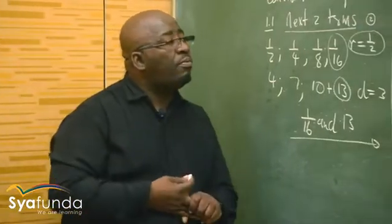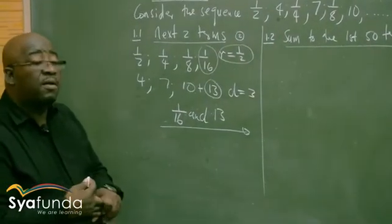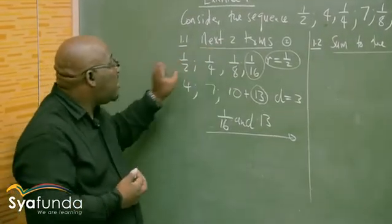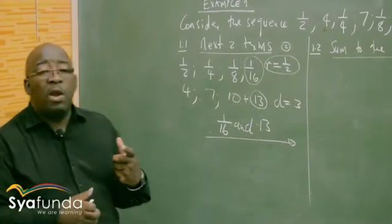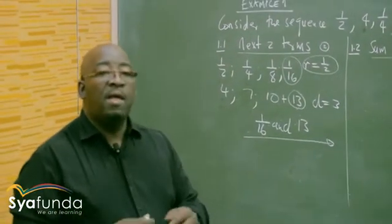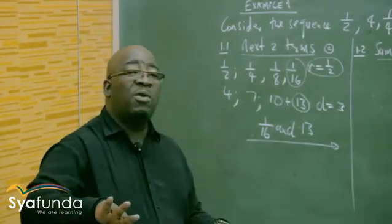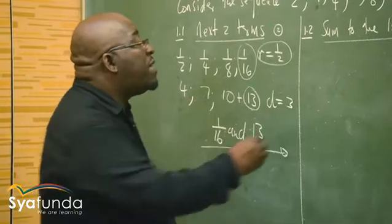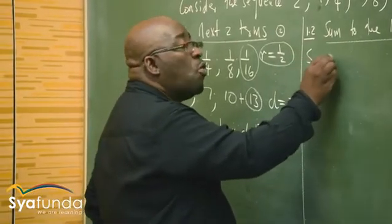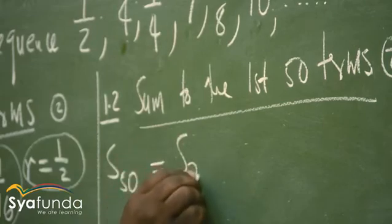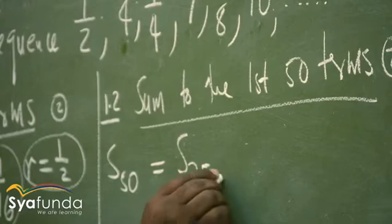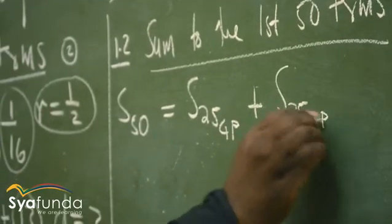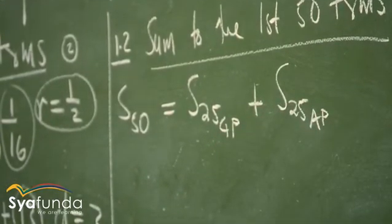Question number two: find the sum of the first 50 terms. We are given two sequences — the geometric as well as the arithmetic. The sum of the first 50 terms would be equal to the sum of the first 25 terms of the geometric progression, plus the sum of the first 25 terms of the arithmetic progression. That's how we find the sum of the first 50 terms.